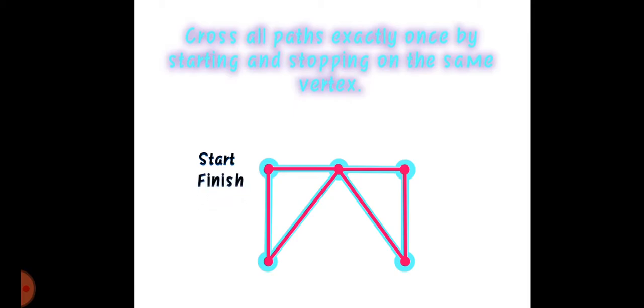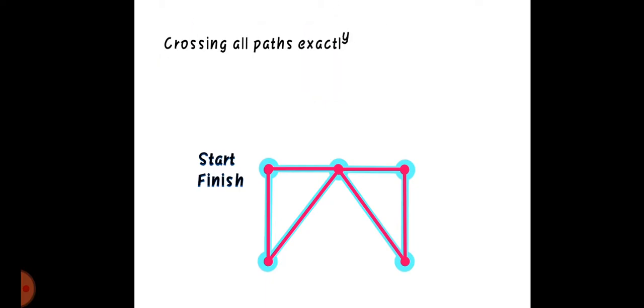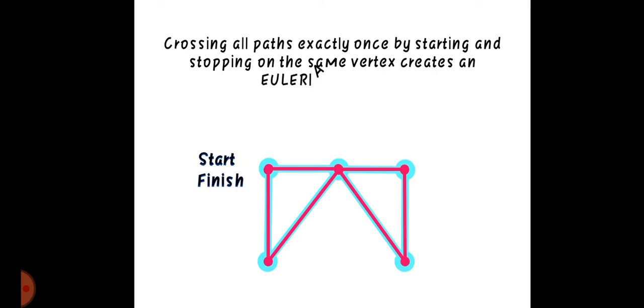We were able to start and finish at the same vertex, and we also were able to cover or use all the lines. So to define: crossing all paths or lines exactly once by starting and stopping on the same vertex or point creates an Euler circuit. I think this would be enough for today. Thank you for watching.